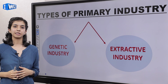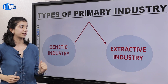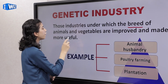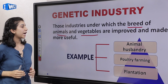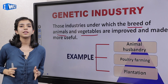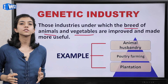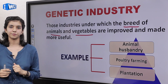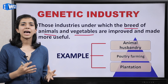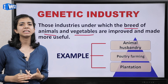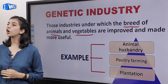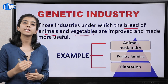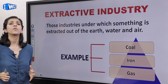Now we have types of primary industries: genetic industry and extractive industry. What is a genetic industry? Those industries under which the breed of animals and vegetables are improved and made more useful — genetic industries deal with living organisms. Yahan pe animals aur plants ko breed aur rare kiya jata hai. Their examples are animal husbandry, poultry farming, and plantation — hens, cows, lambs, sheep etc ko breed aur rare kiya jata hai for milk, eggs respectively. Yahan pe plantation and orchards ka bhi role hai — vegetables and fruits ki production hoti hai with continuous genetic mutation to make it better every day.